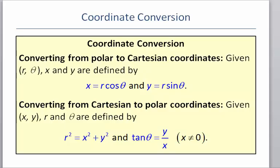If you're converting from polar to Cartesian — our book says Cartesian, but that is the same thing as rectangular. If we want to go to rectangular, meaning we want to have an X and a Y, we can use these formulas: X is equal to R cosine theta, and Y is equal to R sine theta. If we have rectangular — which they're also calling Cartesian — and we want to go to polar, we use: R squared equals X squared plus Y squared, and tangent theta equals Y over X.